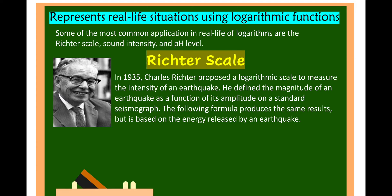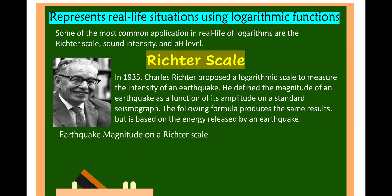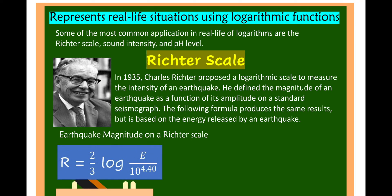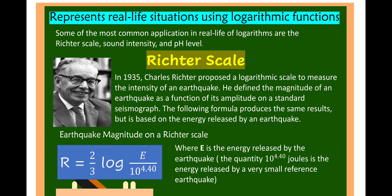The following formula produces the same result but is based on the energy released by an earthquake. The earthquake magnitude on a Richter scale is R = (2/3) log(E / 10^4.40), where E is the energy released by the earthquake, and the quantity 10^4.40 joules is the energy released by a very small reference earthquake.